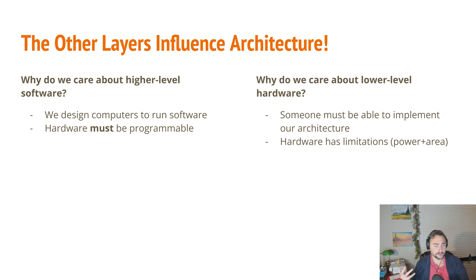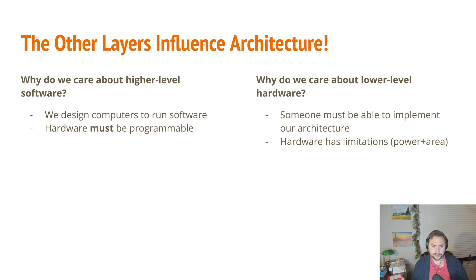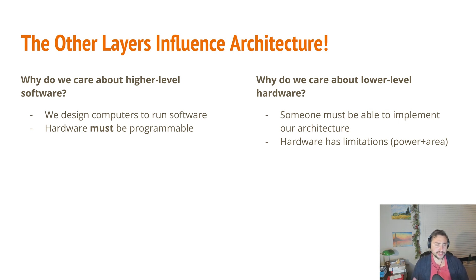Why do we care about higher-level software layers? At the end of the day, we're designing our architectures and computers to run software, and we make different decisions based on the software that's going to run. For example, if I'm designing an architecture for a machine learning workload, the decisions I'm going to make are very different than if I'm designing something for a high-frequency trading application — these are different workloads with different requirements. Another reason is that our hardware has to be programmable. We can implement all sorts of new and exciting things in hardware, but if it's difficult for software to make use of, it can be very difficult for our hardware to be adopted. People need to be able to write tools and compilers for the hardware we're designing.